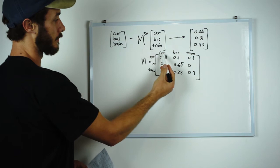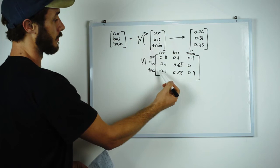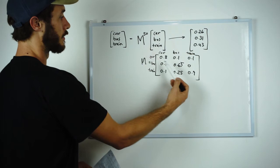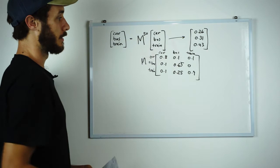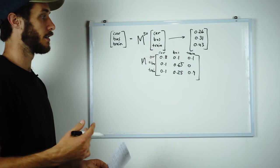Same for the bus. 10% of the bus passengers since the initial state have moved to taking the car. 65% remain on the bus and 25% have started taking the train. So that's how the conditions of this problem are moving over each time period.